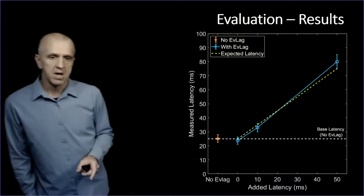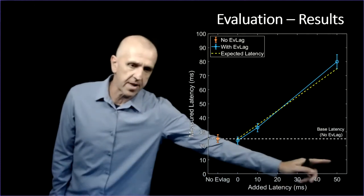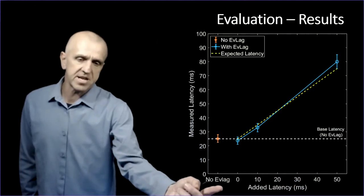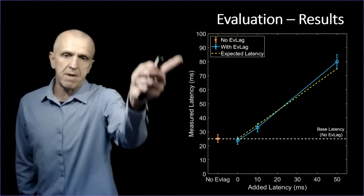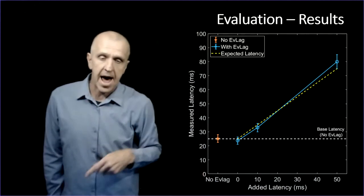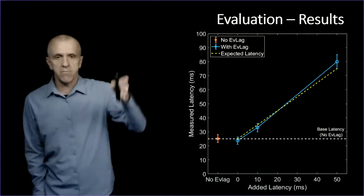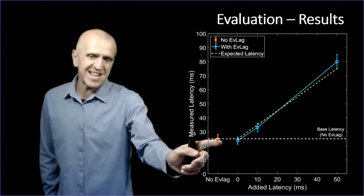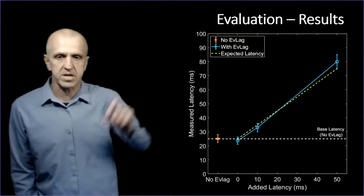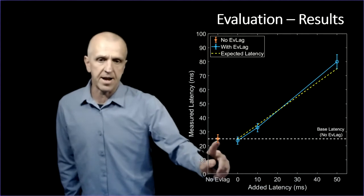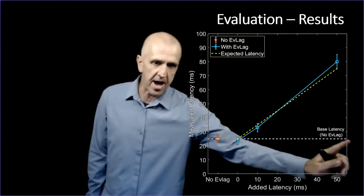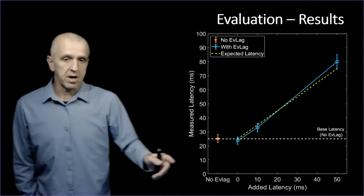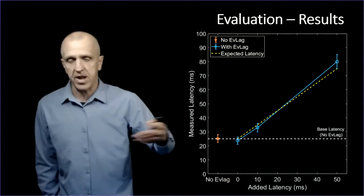This graph depicts the results. Here is the amount of latency I'm going to add on this axis with this first case being the base system without EvLag running. This is the local latency measured. We measured the average of five runs, computed a confidence interval for those values, that bar. The base system we have is 25 milliseconds of latency shown by that dot with a confidence interval. That horizontal line is the base system.